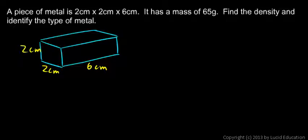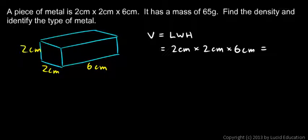So here's the calculation. First let's find the volume. Well the volume of a rectangular solid like this is just the length times the width times the height. So this is going to be 2 centimeters times 2 centimeters times 6 centimeters and you can do that in your head.